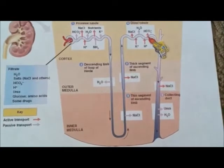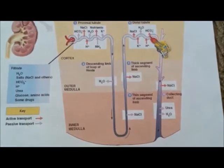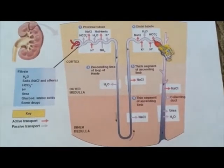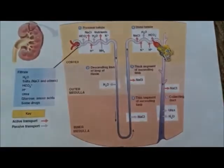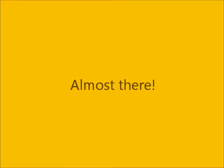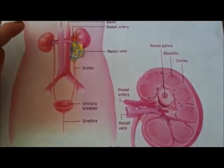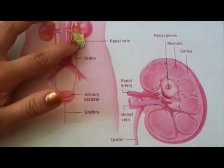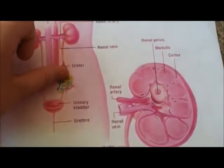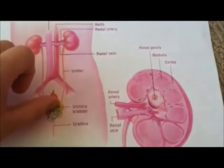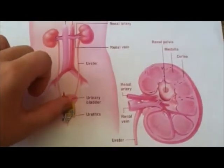Metabolic waste and excess water collect in the collecting tubules to form urine, which goes into the renal pelvis and into the ureter — a tube that carries urine to the urinary bladder, where urine is stored until it is excreted through the urethra.